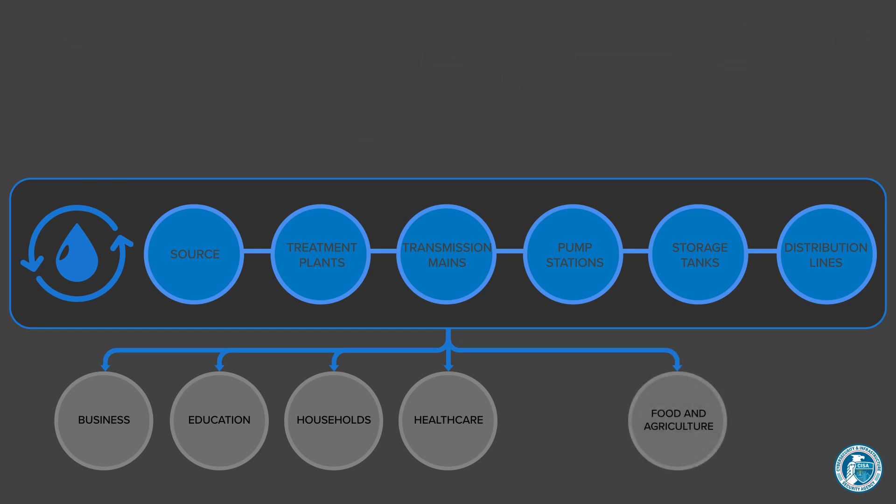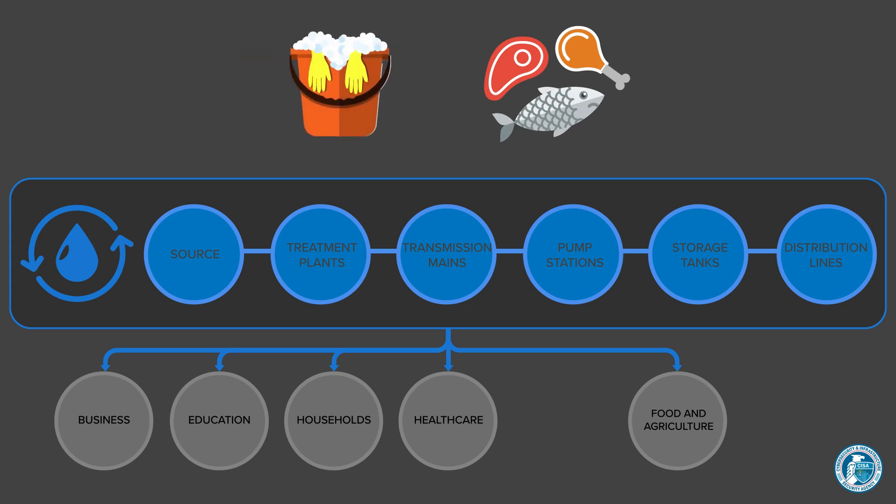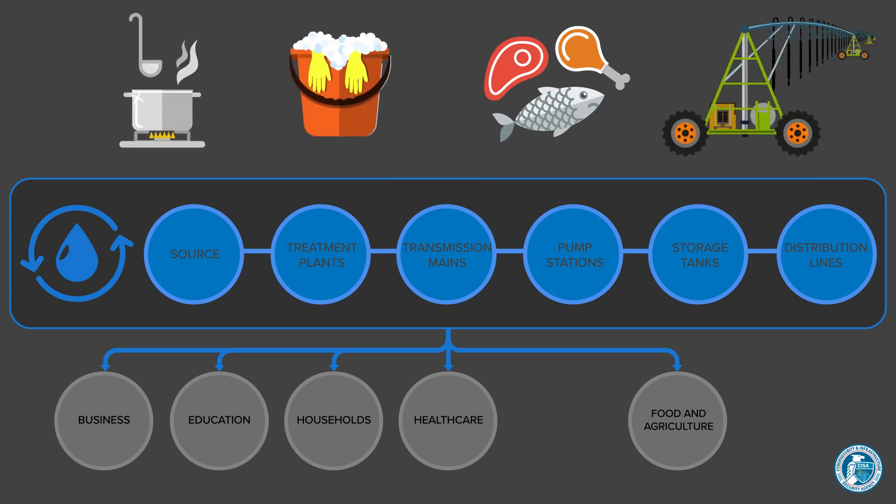The food and agriculture sector depends on water for food processing, cleaning, restaurant operations, and in some cases, irrigation and animal feeding.